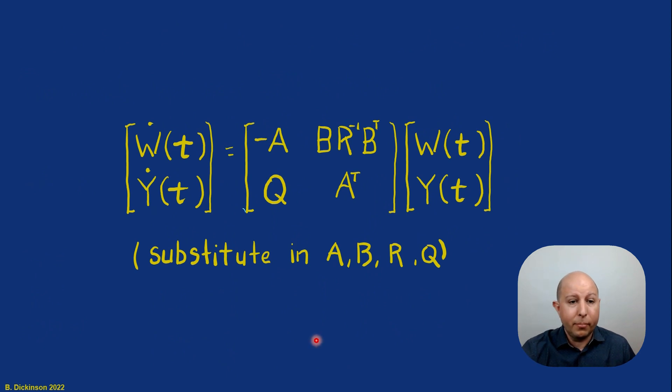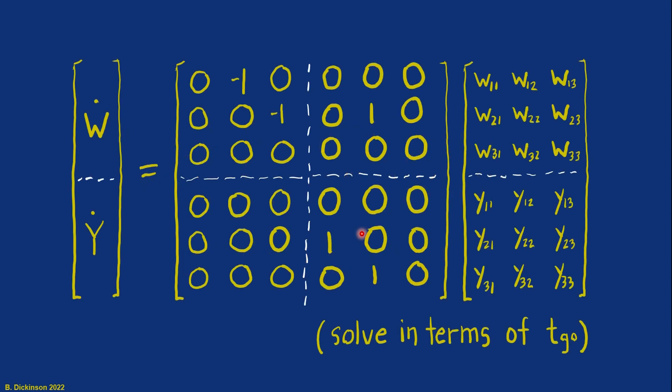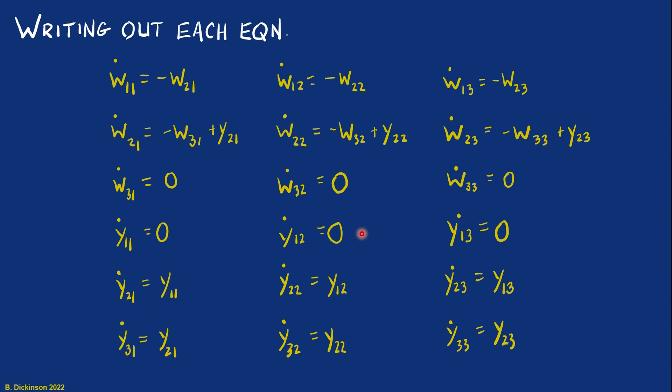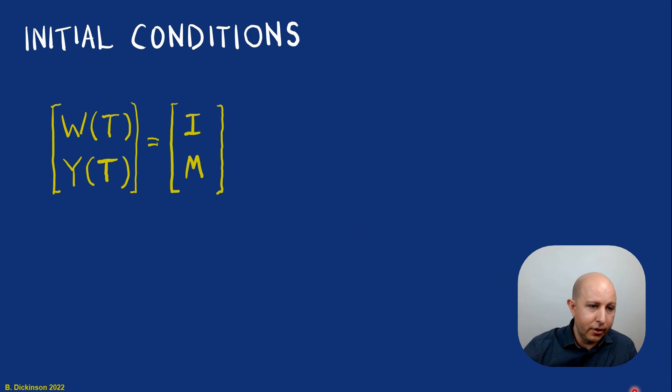So we substitute in all of the problem data into these elements of the Hamiltonian matrix. And this is what we get. It's a bunch of zeros with some minus ones, some ones there. And now we can proceed to systematically solve all of these individual equations in terms of time to go. Remember, final time minus the present time. So writing out each equation now, and then not forgetting our initial conditions. So this is our boundary condition, and actually it's a final time condition, but I say initial condition because I'm going to transform the independent variable T into time to go. So that the final time condition becomes an initial condition.